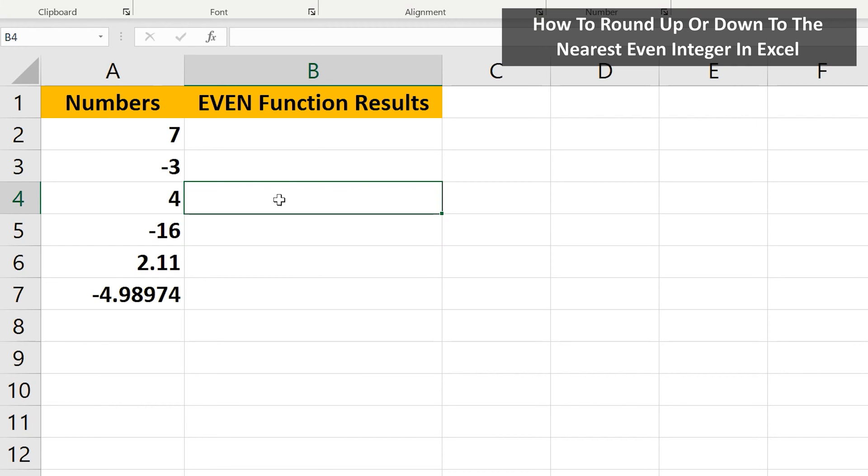The EVEN function rounds a positive number up and a negative number down to the nearest even integer. As an example, here in cell A2 is the number 7.